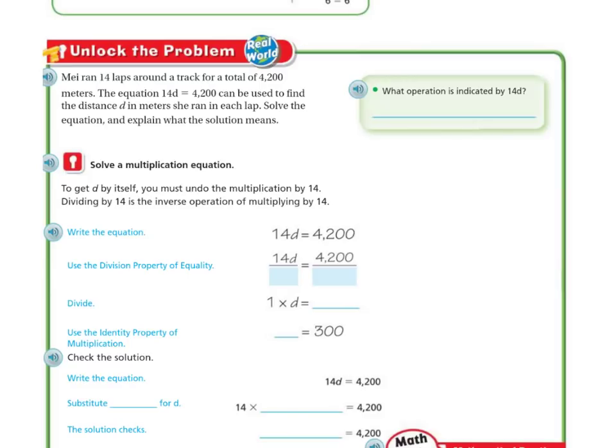Remember, whenever the letter is next to the number, we are multiplying. I'm going to write an X there for multiplication. So let's solve the multiplication equation. First we have to try to get D by itself. In order to do that, you must undo multiplication. The opposite of multiplication is division. That is its inverse property.